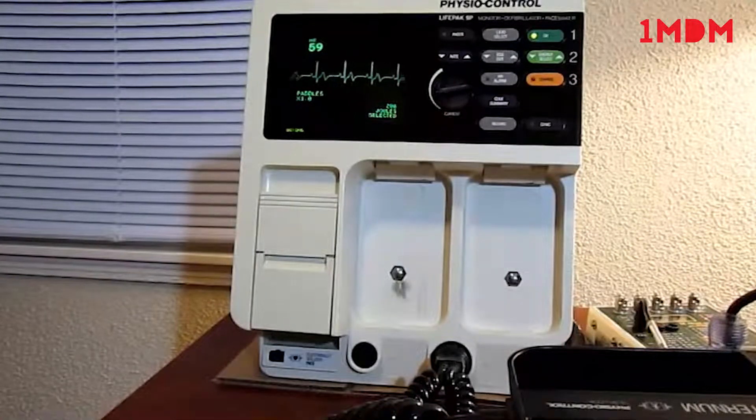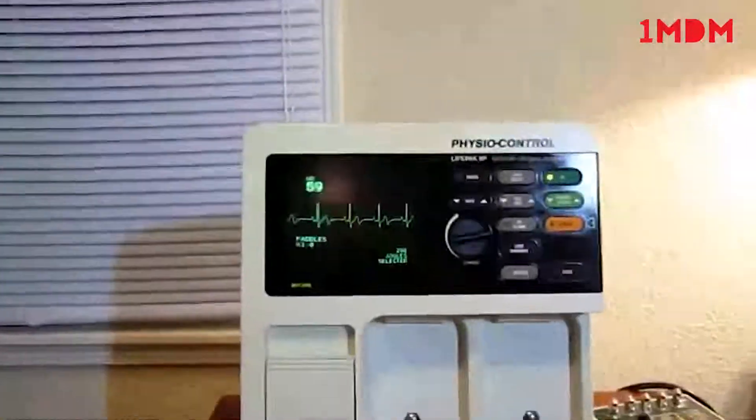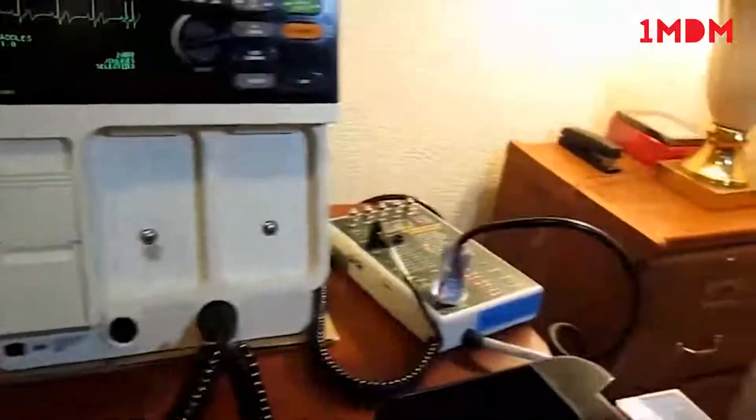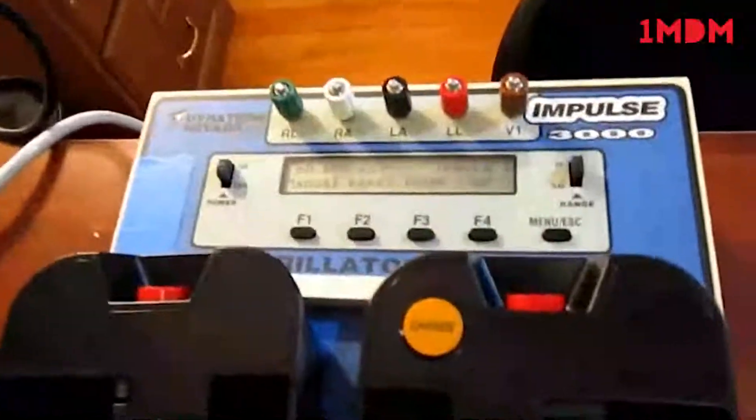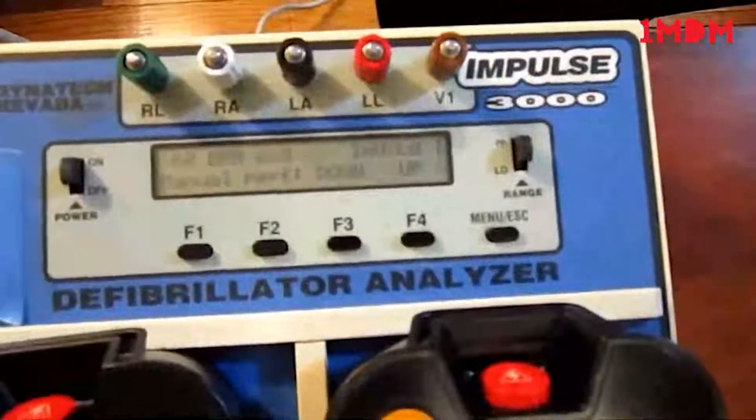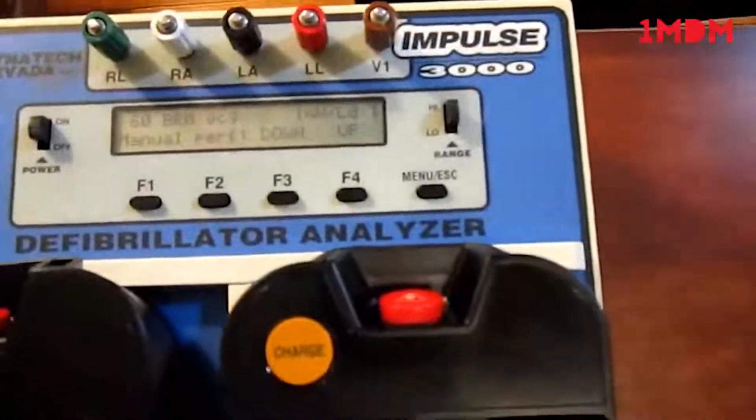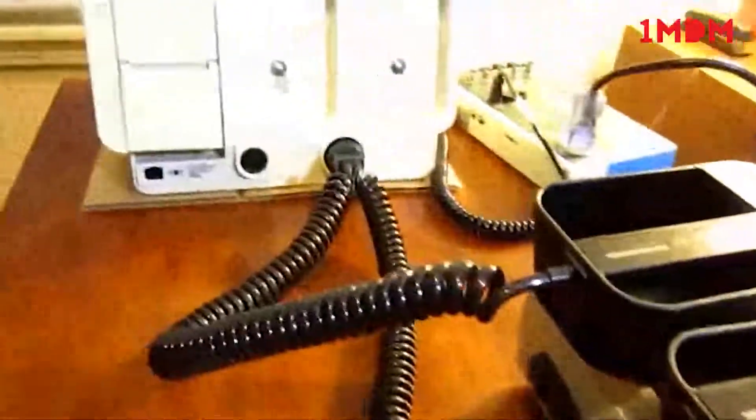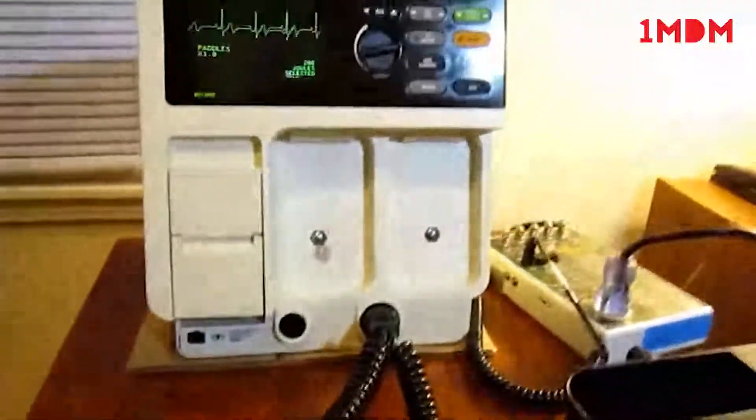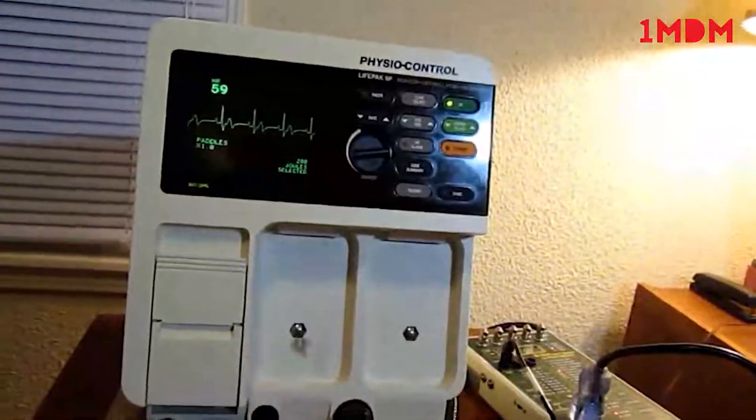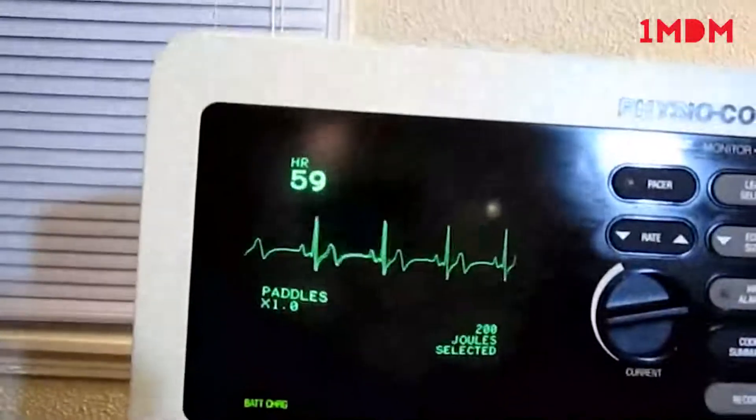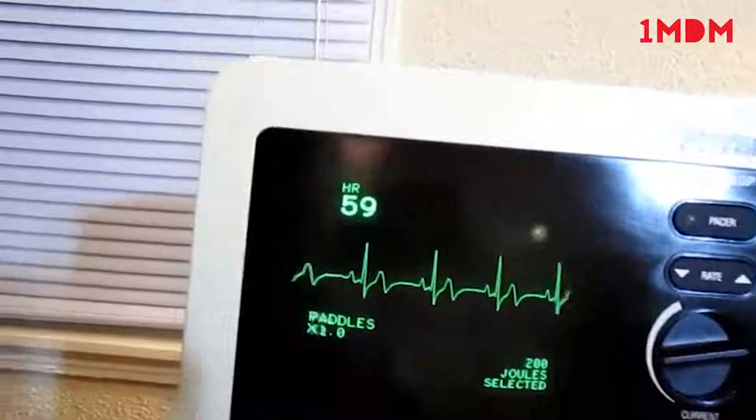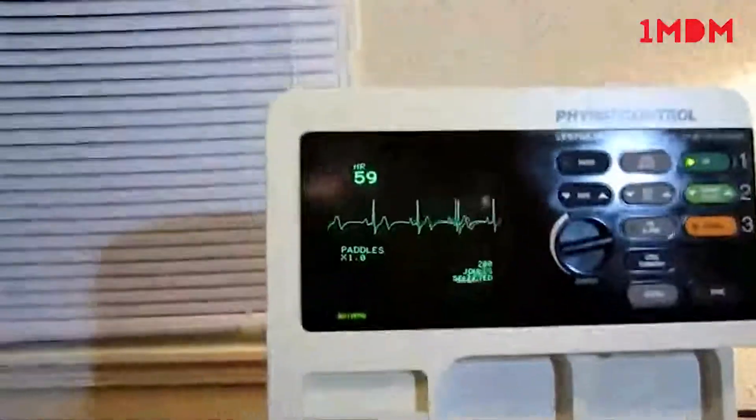So now we're checking the monitor. We're feeding 60 beats per minute from our tester simulator. We're actually using the pads as the pickup since this unit doesn't come with an EKG cable. The monitor is reading 59 to 60 beats per minute, which is what we're feeding it.